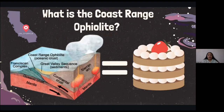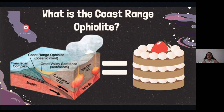It's a geological formation located in California that represents a part of the oceanic crust that has been uplifted and exposed, so now it's closer to the surface. You can think of the Coast Ranch of Violet as a cake of layers that has melted and then cooled, creating different layers of materials. Just as in a cake you can find different flavors and textures, in the Coast Ranch of Violet you can find different layers of rock that tell you the history of how the ocean floor was formed.